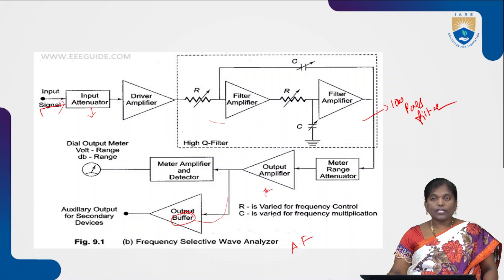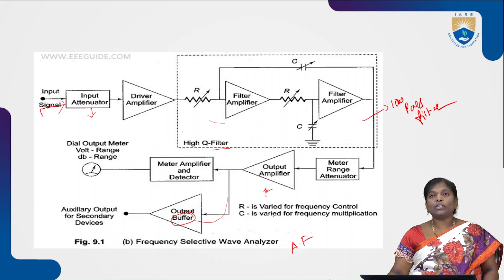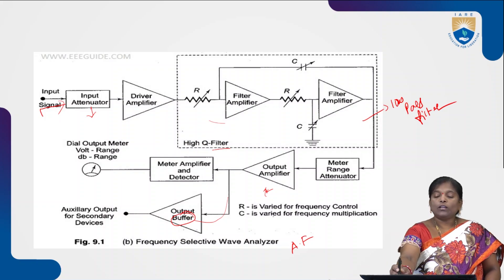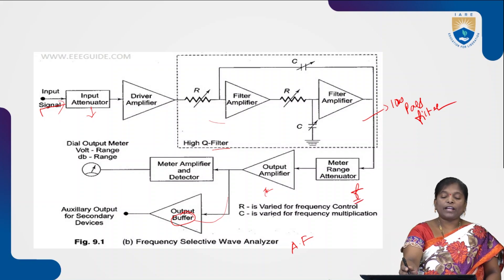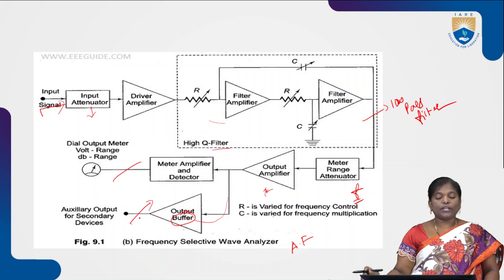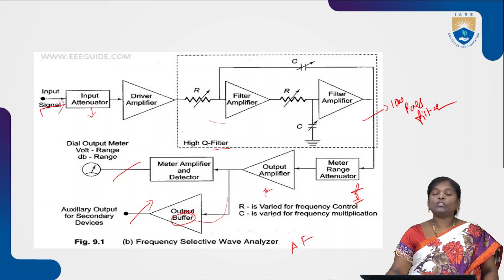The name frequency selective wave analyzer itself indicates that we are selecting a particular frequency — obtained with the help of a filter. The high-Q filter used here is a low-pass filter, which allows only low frequency signals and rejects all other high frequency signals. The particular frequency of the incoming signal is analyzed and its magnitude is observed in the meter range, and also obtained from the auxiliary output.